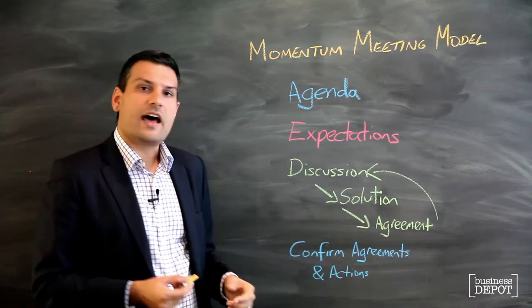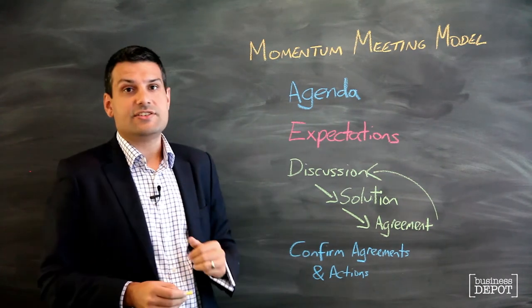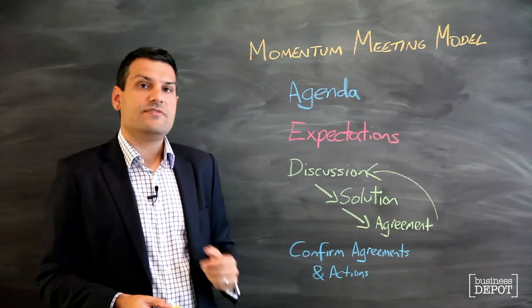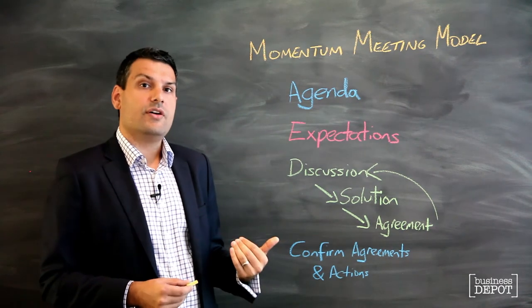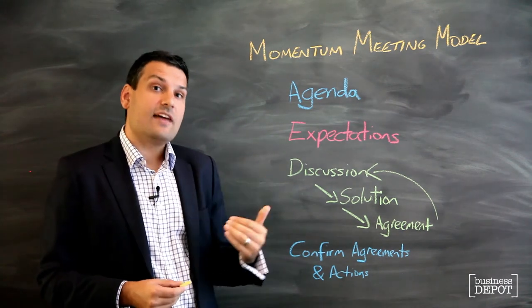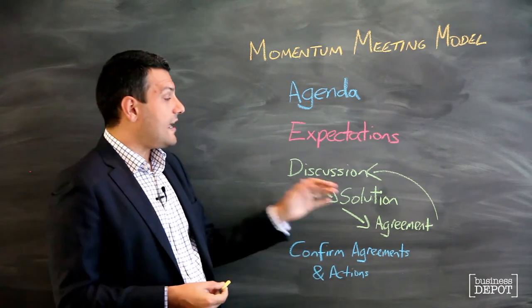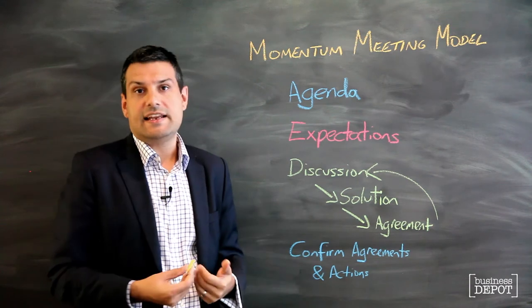The last item in any meeting is taking the time to confirm the agreements that you've made and the actions that have been agreed. This is why having somebody document this is the most efficient process, because at the very end he or she can run through all of those. Make sure you allow enough time at the end of the meeting to have that conversation, because there's no point making a whole heap of agreements that don't actually get communicated and don't get taken into the wider business.